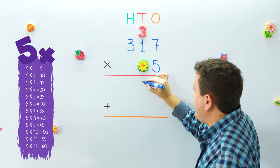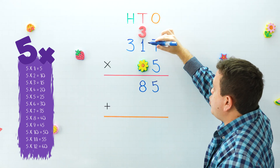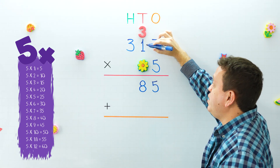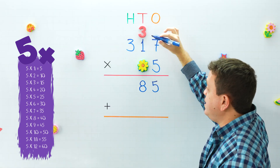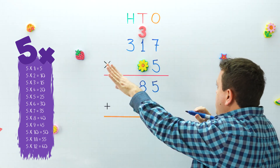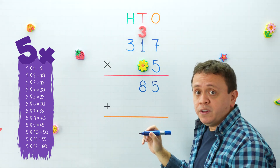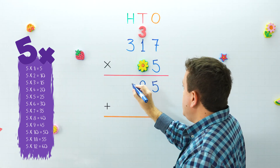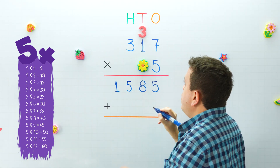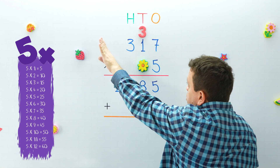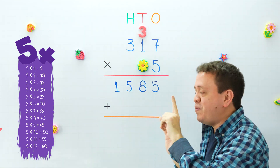We move to the left: five times one equals five, plus three that we carry gives us eight. We move to the left: five times three equals 15. We can put both digits here because there are no more digits to multiply on the left. We finish with the first step.